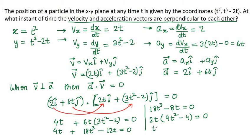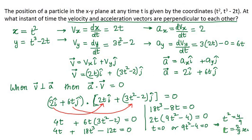Therefore, either t equals 0 or the bracket 9t² - 4 equals 0. This gives us t² = 4/9, which means t equals 2/3 seconds. This is the answer to the question: t is equal to 2/3 seconds.